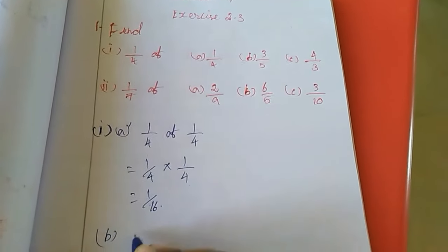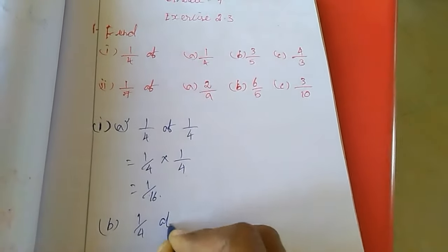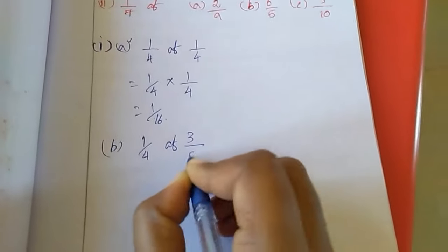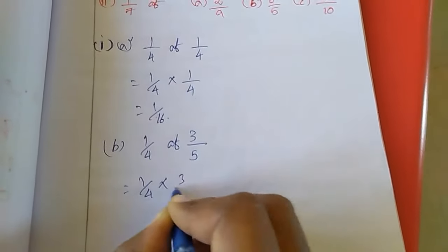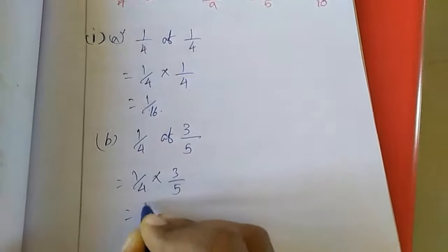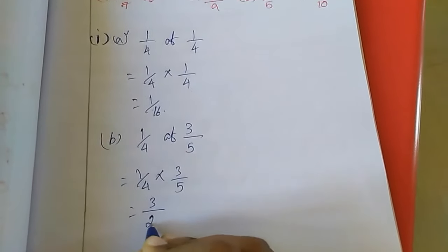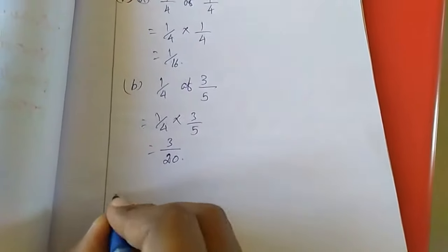Next, B: 1/4 of 3/5. This is equal to 1/4 into 3/5. If you multiply 3, 4 by 7, 20. Now see sum C: 1/4 of 4/3, so 1/4 of 4/3.